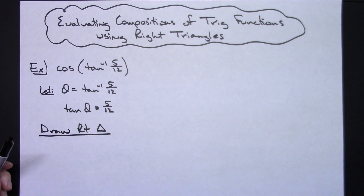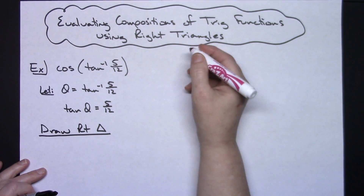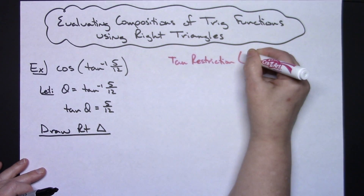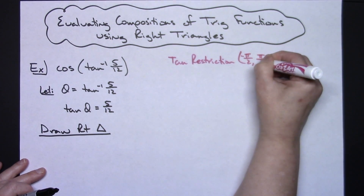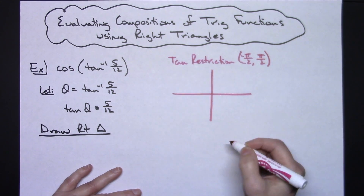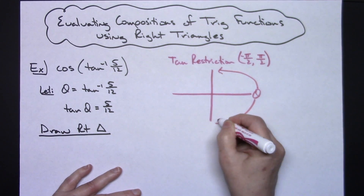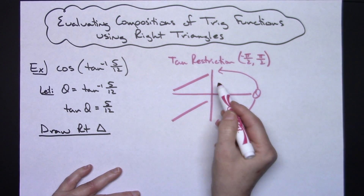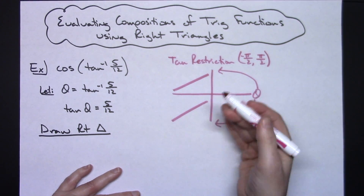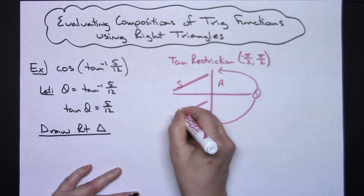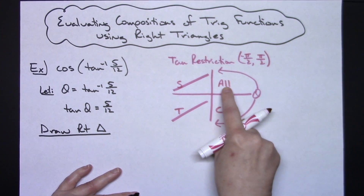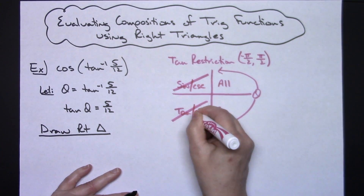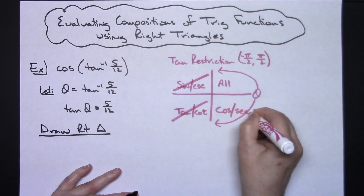Let's write some stuff down here to help with the placement. You should remember that your tangent restrictions are the open interval from negative pi over 2 to pi over 2. So my theta has to lie in there — it can't be in the other quadrants. In my four quadrants, using the mnemonic 'all students take calculus': all trig functions are positive in quadrant one, sine and cosecant are positive in quadrant two, tangent and cotangent are positive in quadrant three, and cosine and secant are positive in quadrant four.